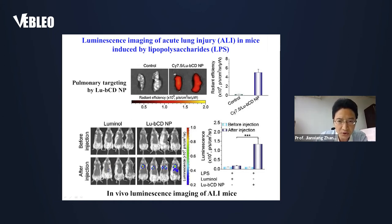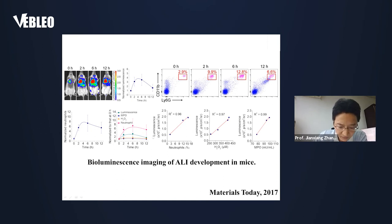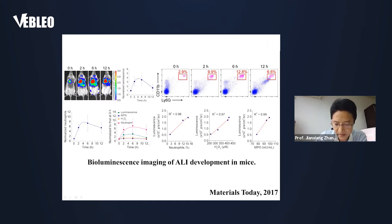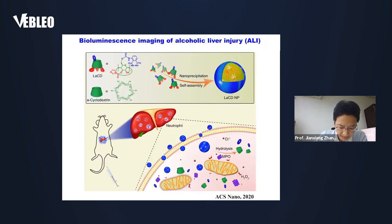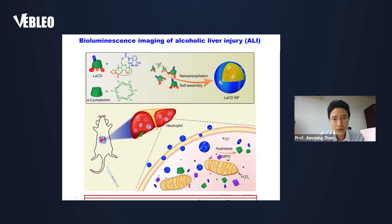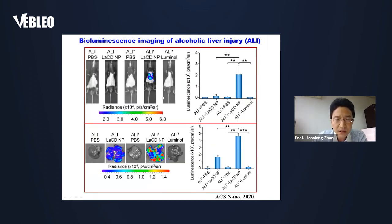These images show luminescence and weak luminescence for the luminol-treated mouse. It should be noted that the development of acute lung injury can also be monitored by the nanoprobe, because the luminescence intensity of our nanoprobe is well consistent with the levels of neutrophils, MPO, and hydrogen peroxide. Furthermore, we found that this type of nanoparticles can be used for luminescence imaging of acute liver injury in animal models, such as alcoholic liver injury. This image shows luminescence in a mouse stimulated with alcohol.